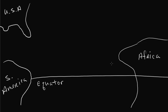This is the United States. That's why I label everything, because it's hard to tell what my things are here. This is South America. This line represents the equator, and this strange-looking object over here is Africa.